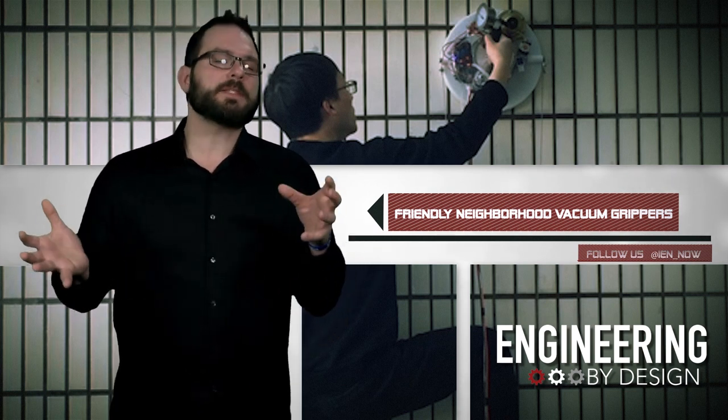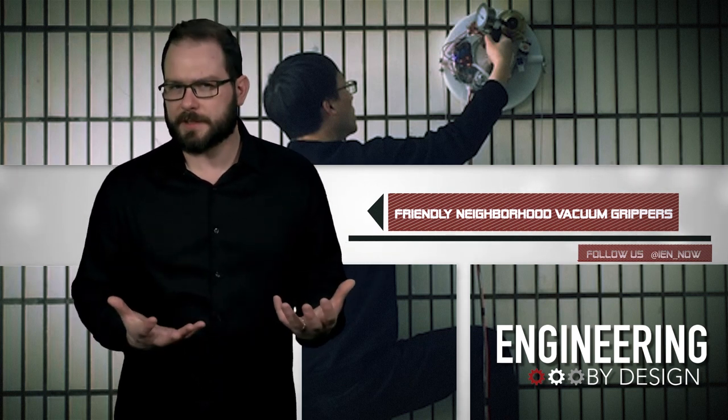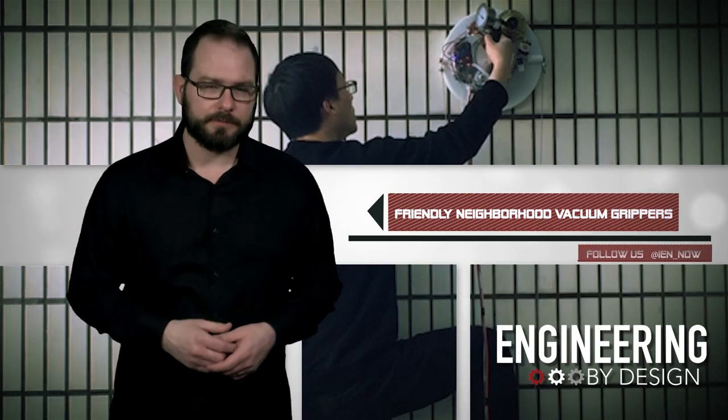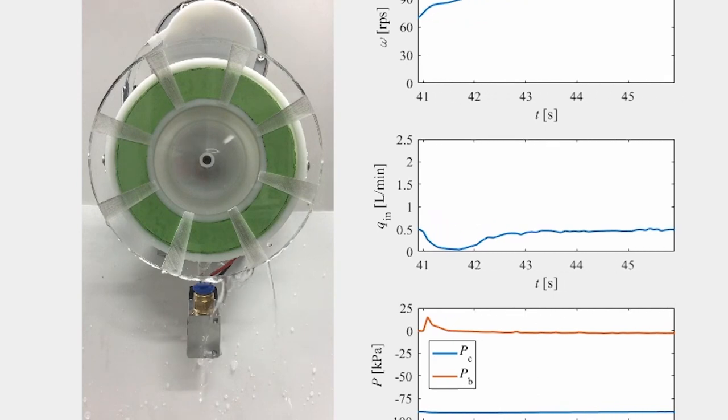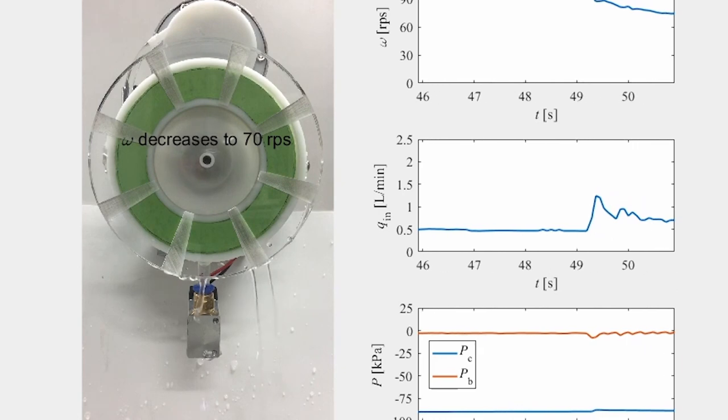Previous vacuum grippers can't maintain suction on rough surfaces because of leakage. The researchers use a zero pressure difference or ZPD method that maintains the vacuum by using a high-speed rotating water ring between the surface and the suction cup.